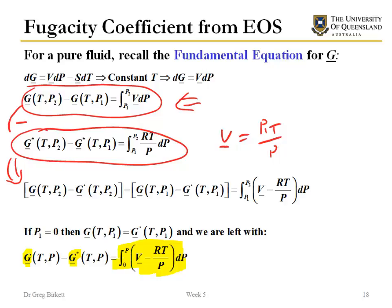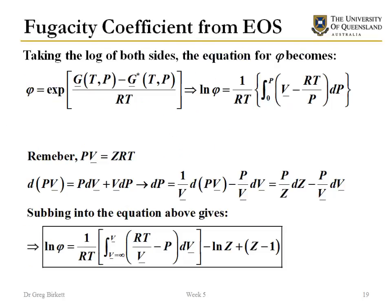Cleaning this up a little bit and taking the log of both sides, what I get is that the log of my fugacity coefficient is given by 1/RT times the integration from the previous slide.